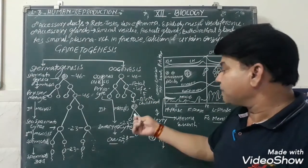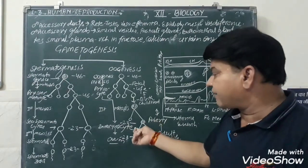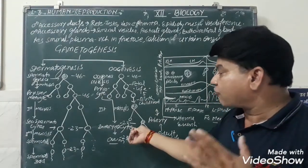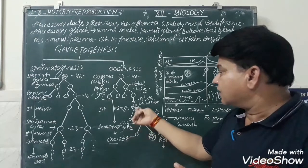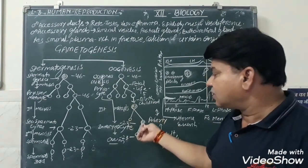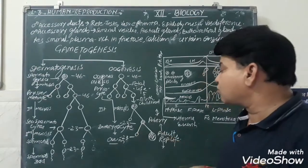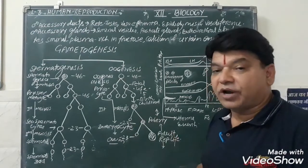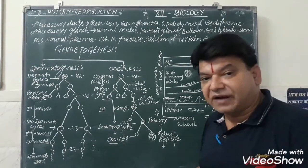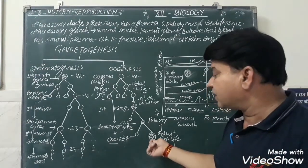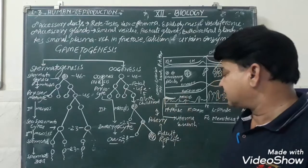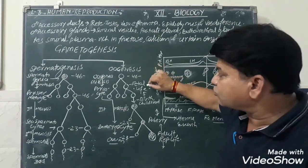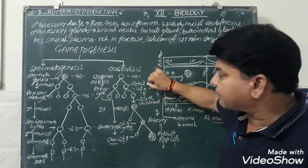The primary oocytes undergo the first meiotic division and form secondary oocytes. At the time of puberty, secondary oocytes are formed — from birth up to puberty, the primary oocytes get converted into secondary oocytes. These secondary oocytes then undergo further division for the formation of the ovum. Three polar bodies are formed, which degenerate after some time, and only a single ovum is formed.